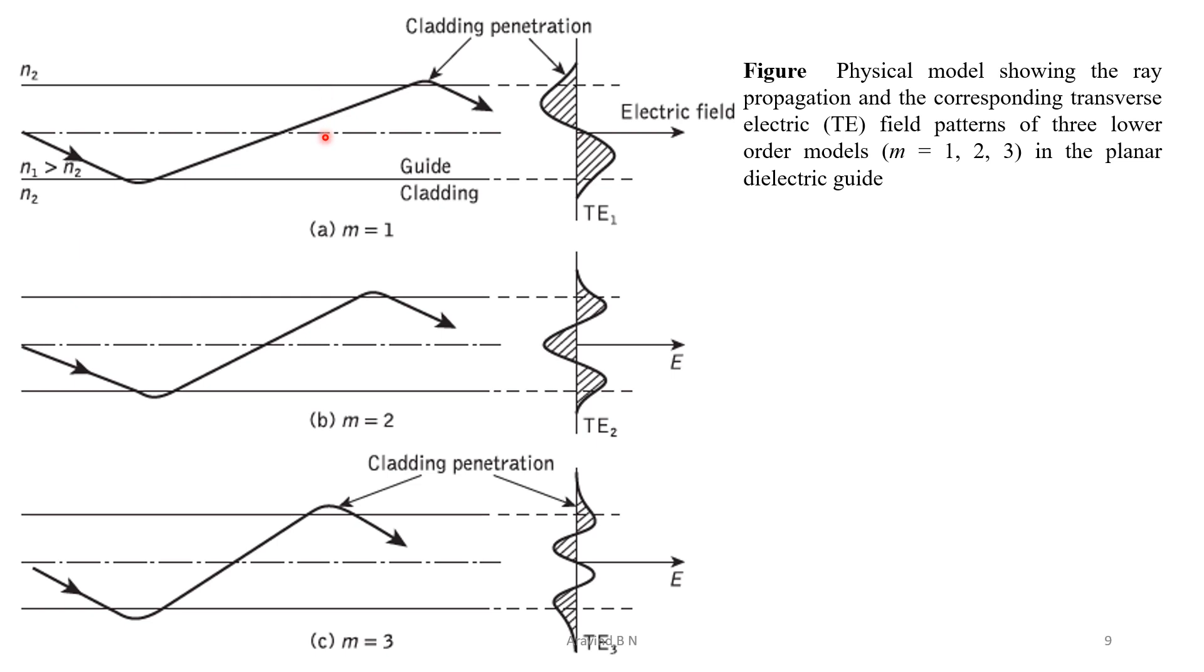Let us have more understanding about this mode realization. So, we can observe three different ray propagation over here. So, this one is with m is equal to 1, that is TE1. This is with m is equal to 2, that is TE2. And this is with m is equal to 3, that is TE3.